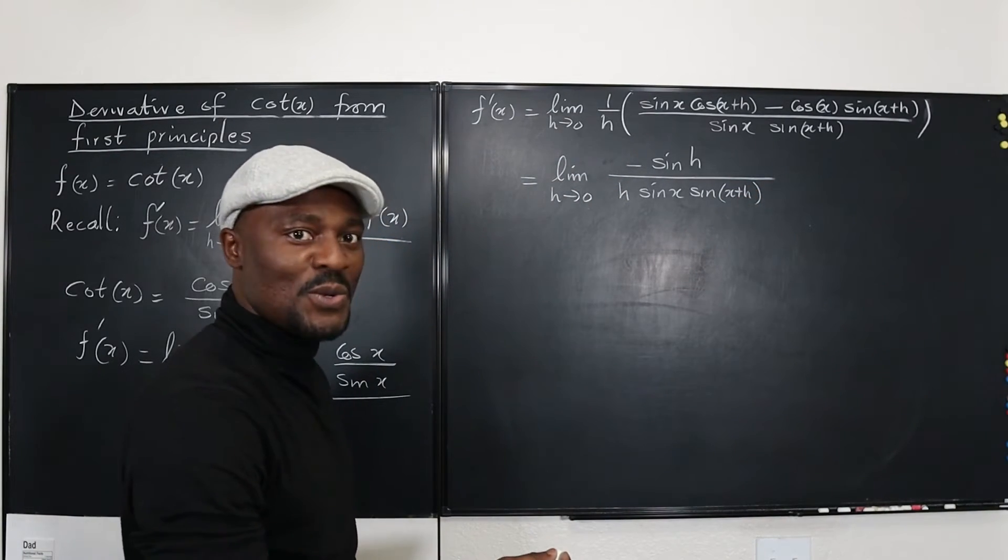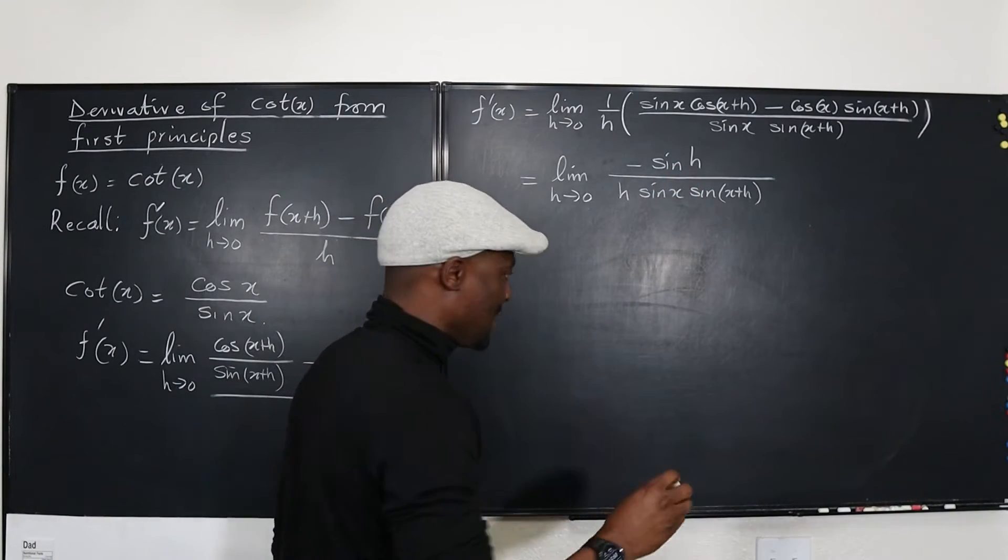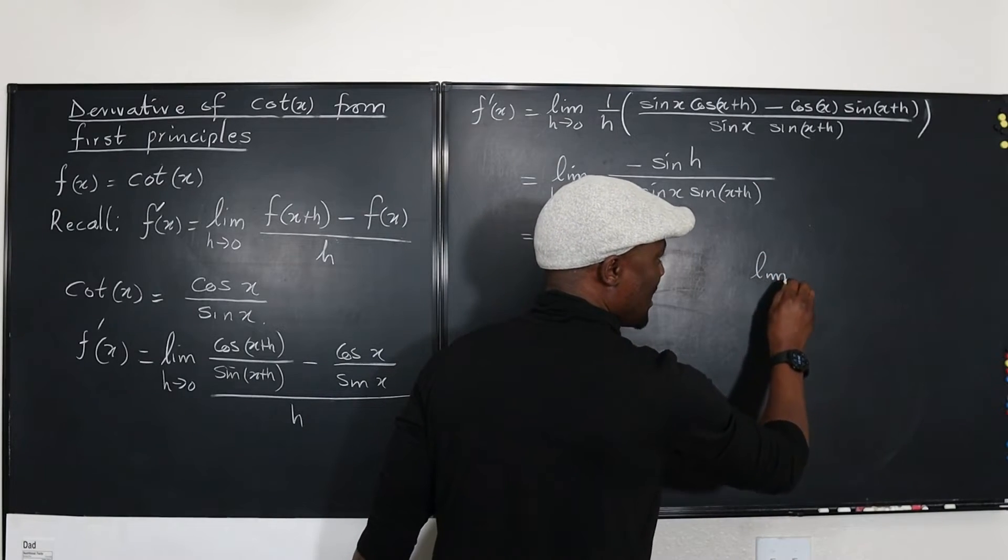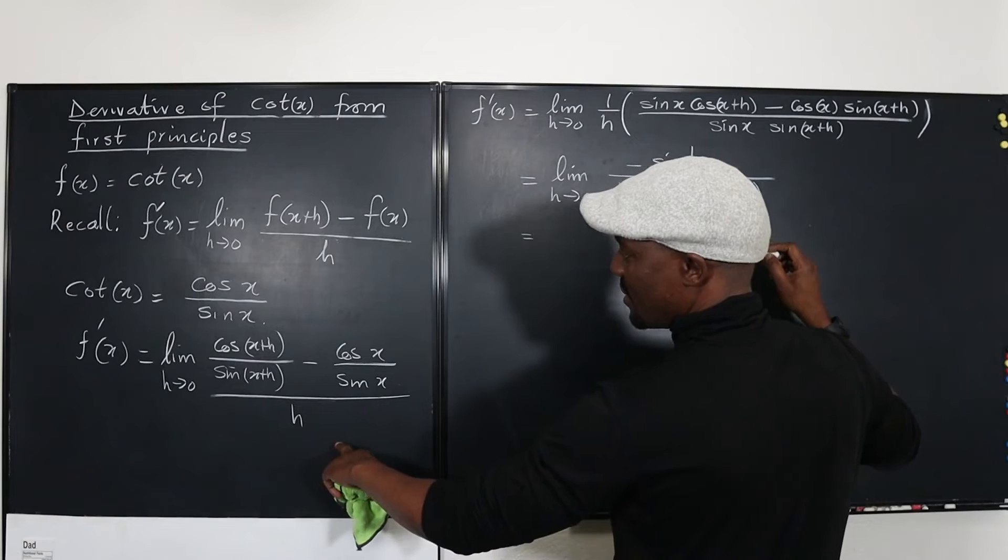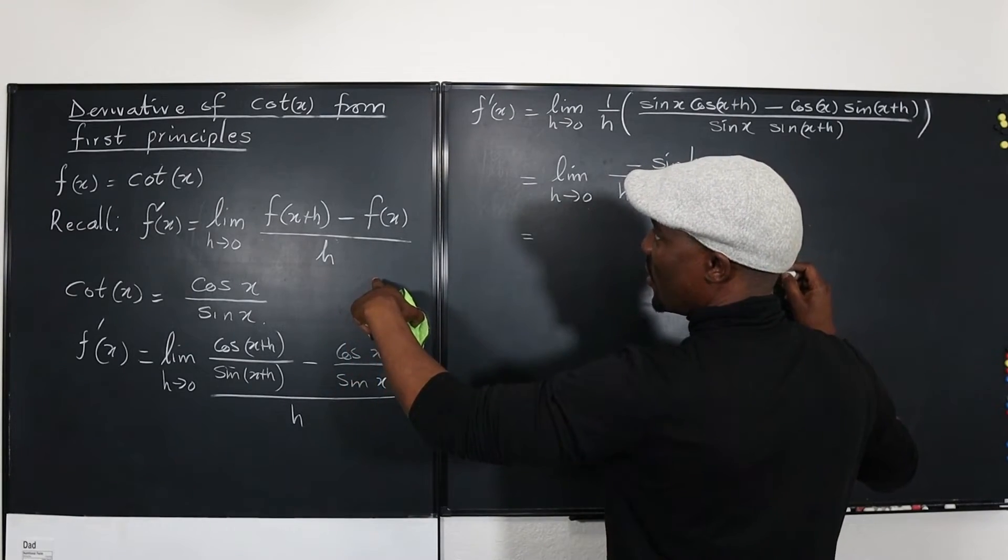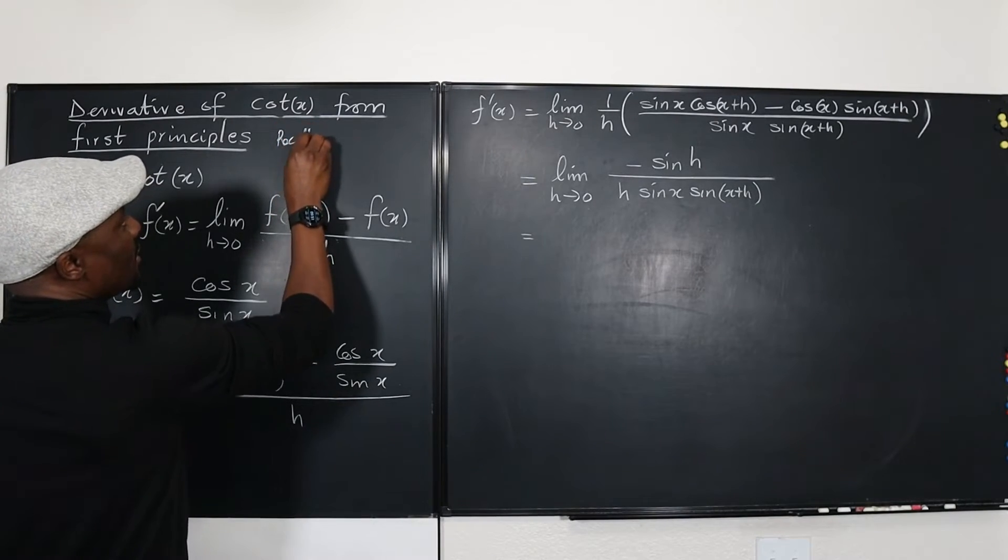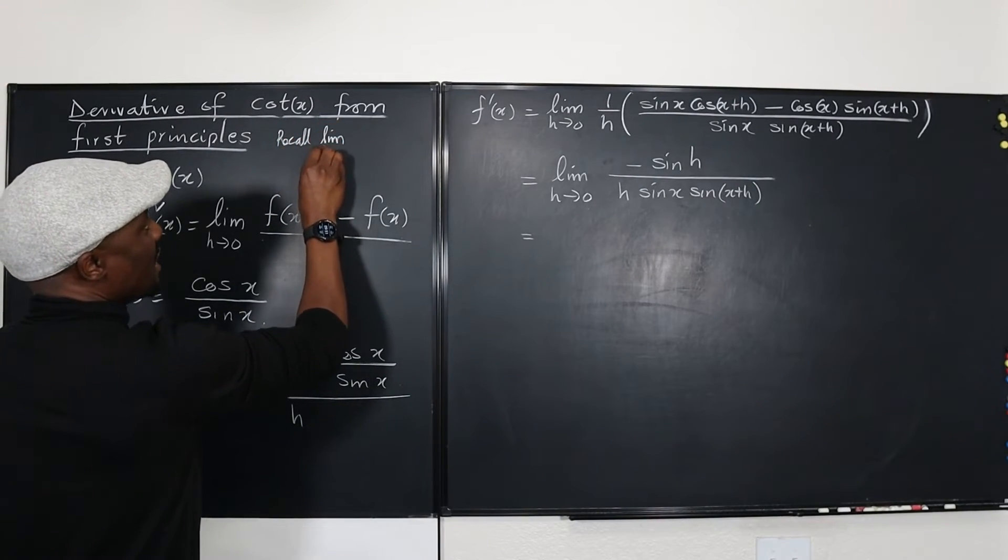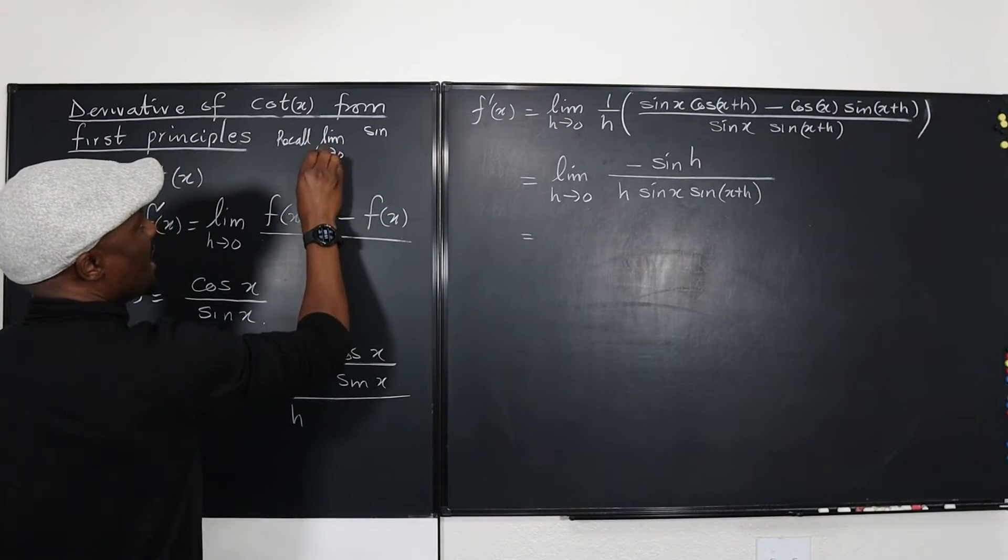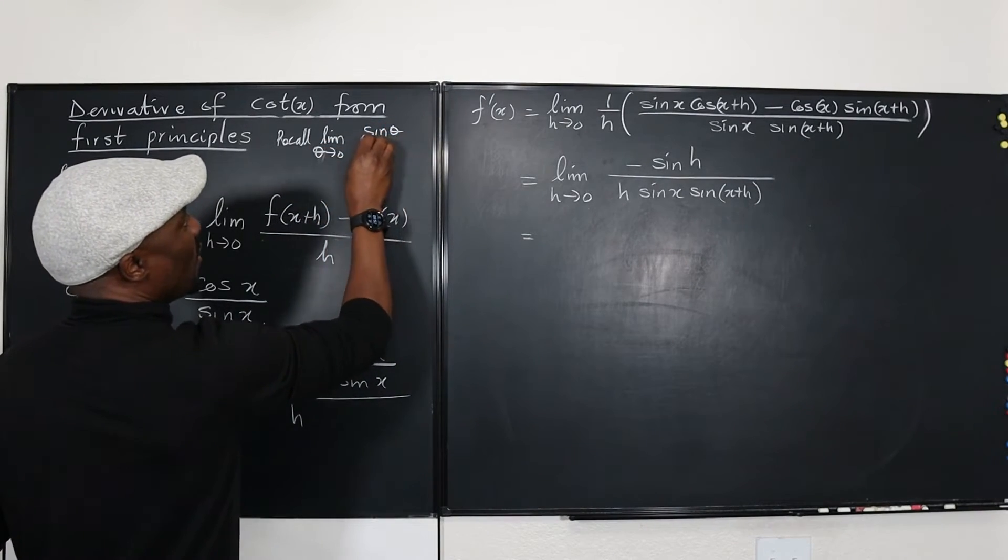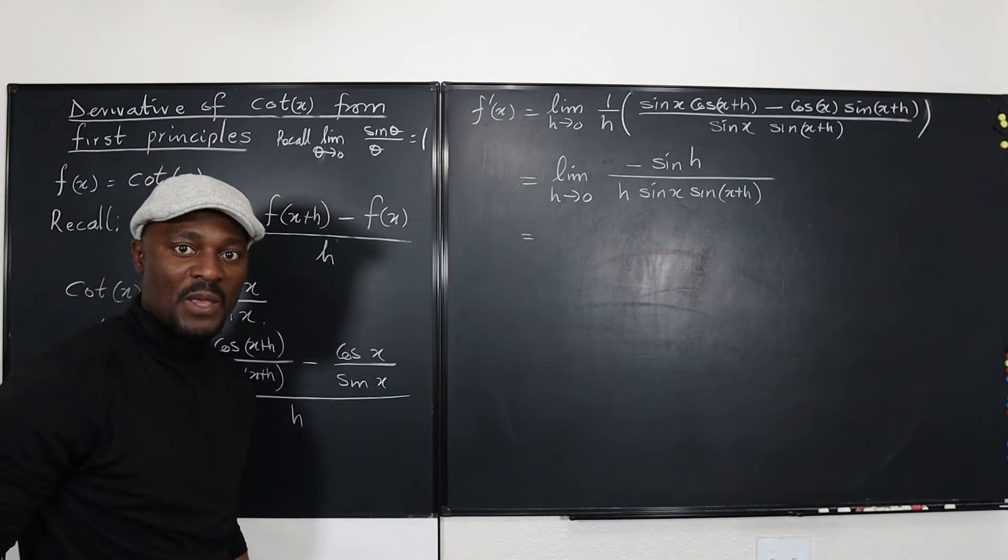And what can we do here? Well, I know that if I put this h under this expression because I know that the limit, so this is something to recall again. Maybe I should have written it here. Another recall, let's squeeze it in here. Recall that the limit as h goes to zero, or let's say x or theta, of sine theta over theta is always equal to one. This is something you already know.